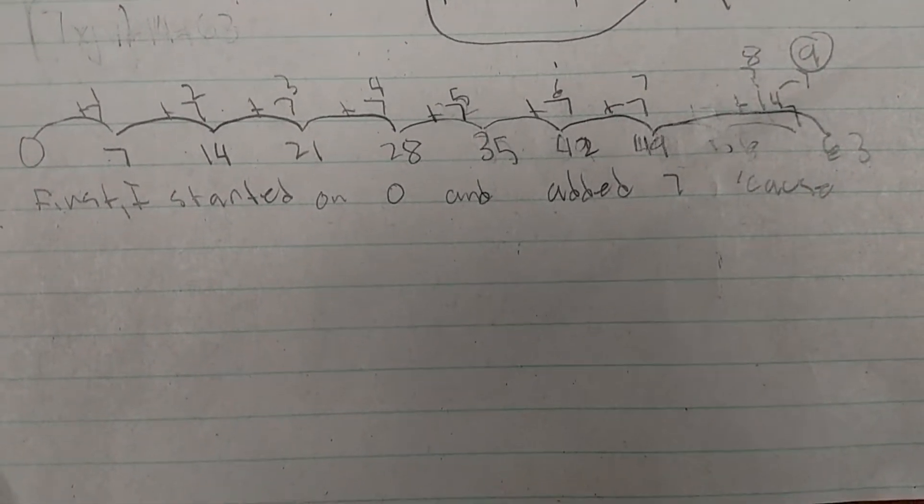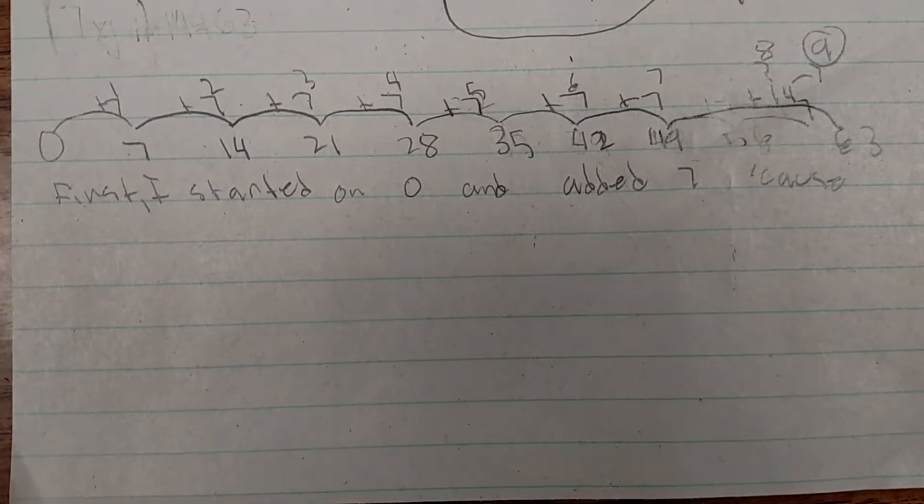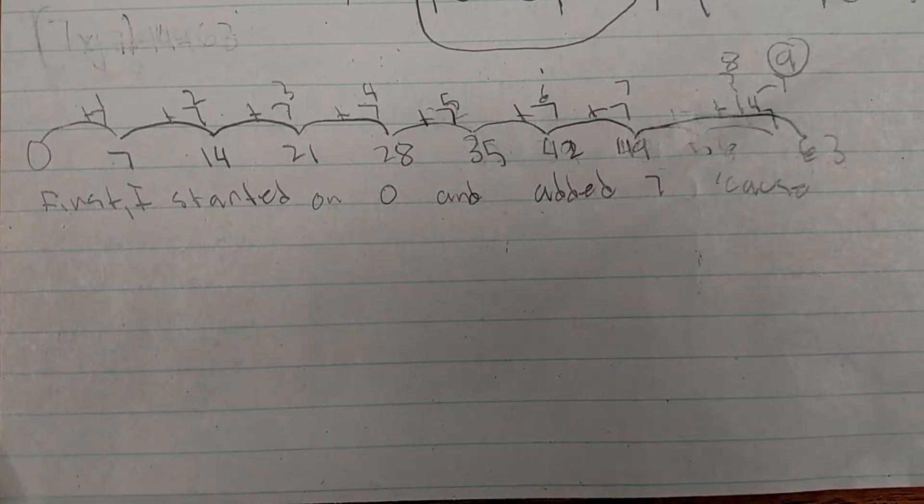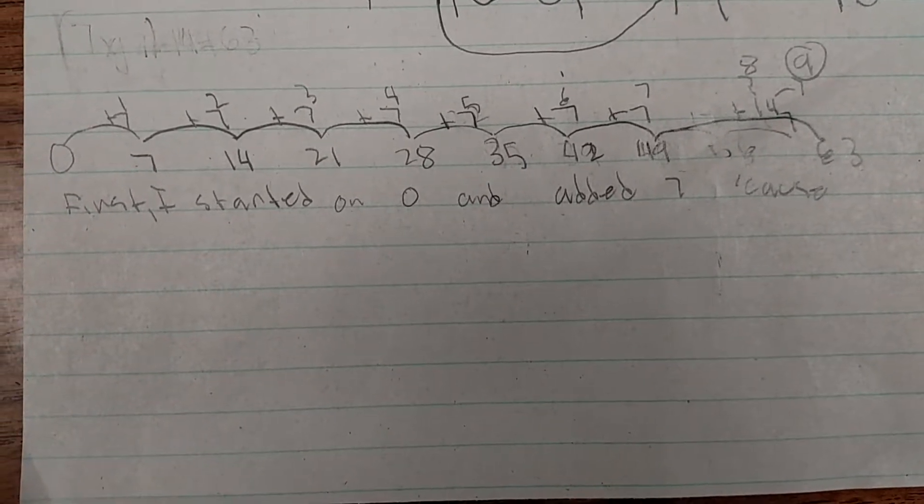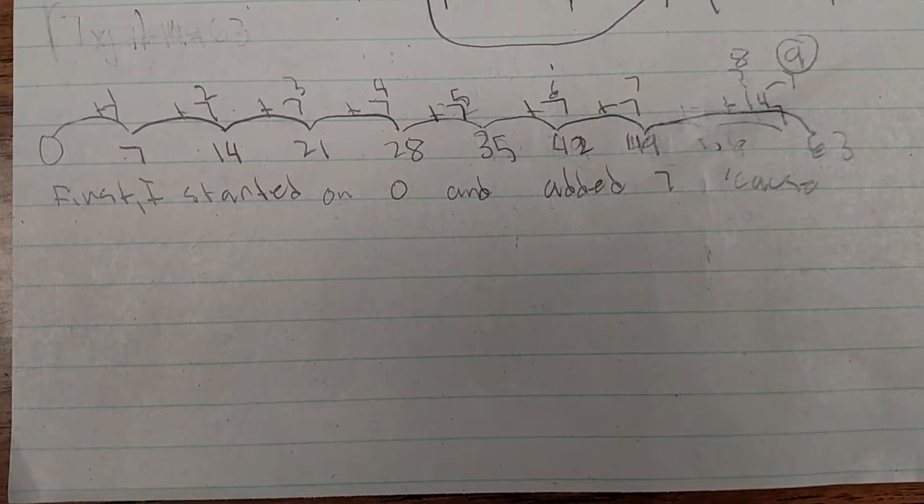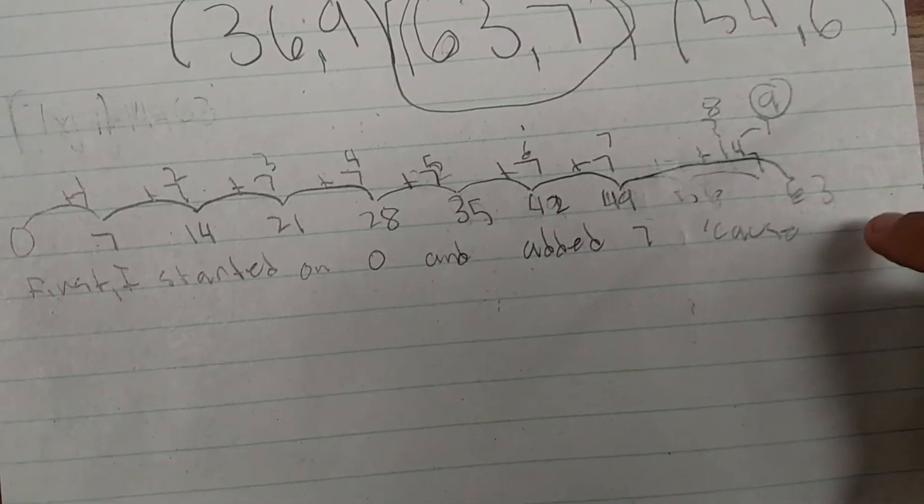And 42 plus 7 equals 49. And instead of adding 2 more 7s, I added 14 because I know 7 and 7 equals 14. So when I added 14, I got 63. And in the problem it says Mr. Smith has 63 muffins. So these are all the 63 muffins.